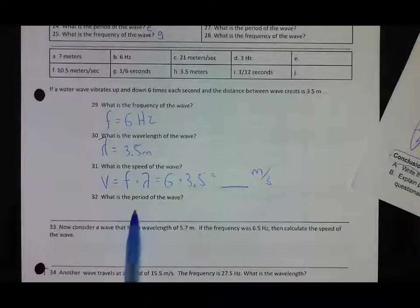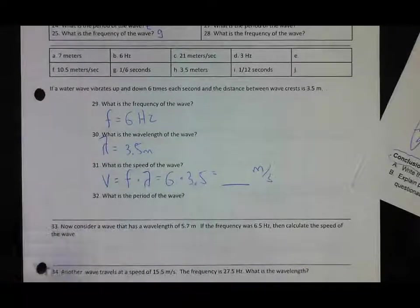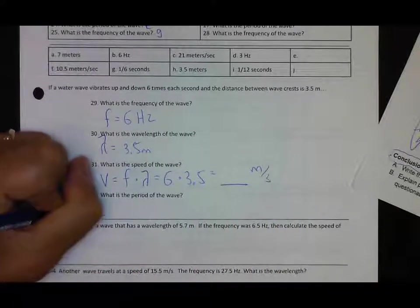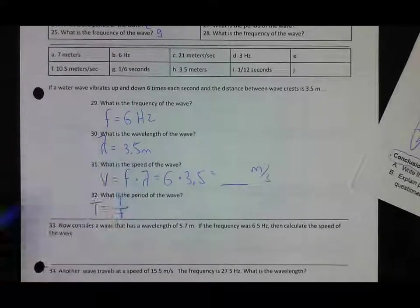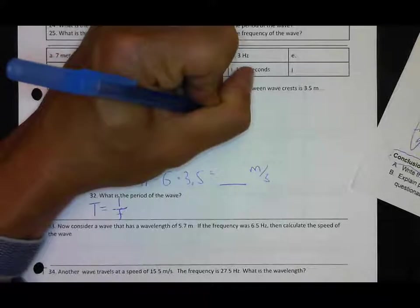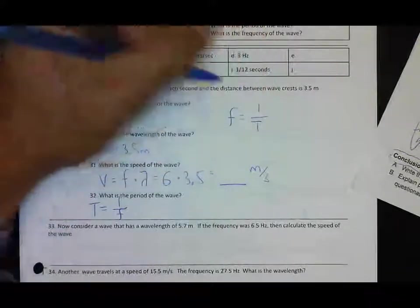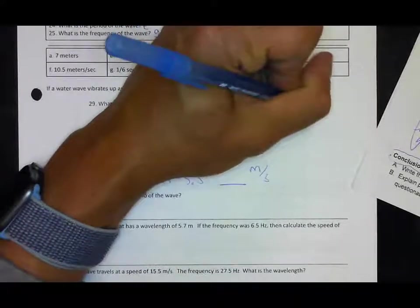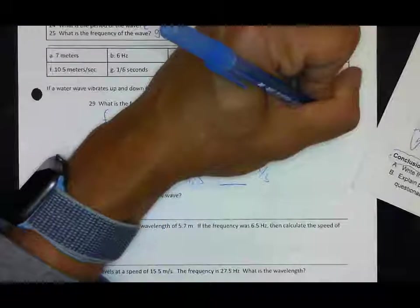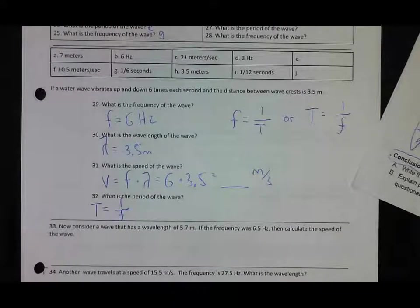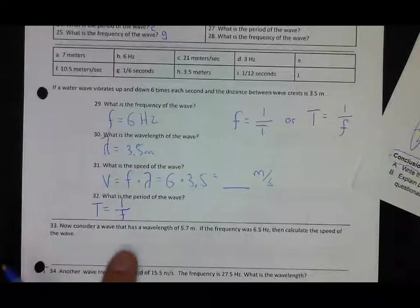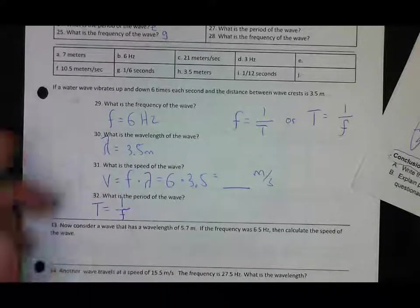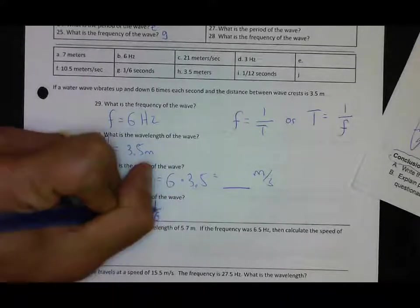Your period is just your time for one wave. Now if you have the frequency, you can determine the period because we said before that frequency is one over period. If that's true, then we could also say period equals one over the frequency. So if you have the frequency, we have six, then our period is one divided by six seconds.